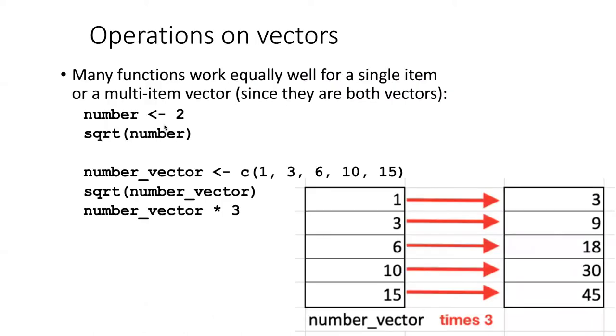We saw that we could put a number into a function like square root. So if we assign the number two to a variable called number, and then put that in as an argument of a function, then it'll tell us what the square root of two is. But this kind of a function, the square root function works equally well if the thing that we pass into the function is not just a single number, but actually a vector of numbers. So here I'm creating a vector of numbers. I pass it in.